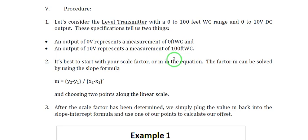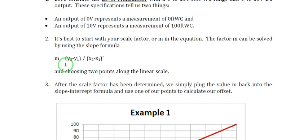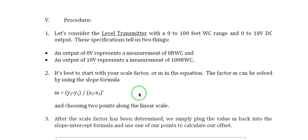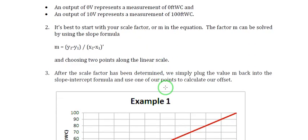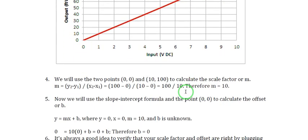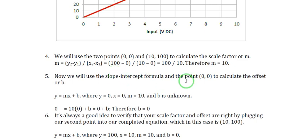So using the two-point form, we are going to determine our slope by substituting the values. Our Y will be the value of our water level. Then our X is our direct voltage output of the level transmitter. In which case, we get a slope of 10.